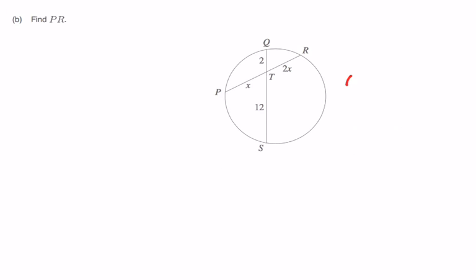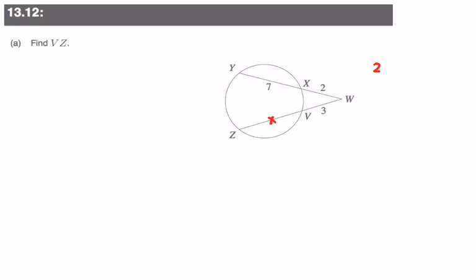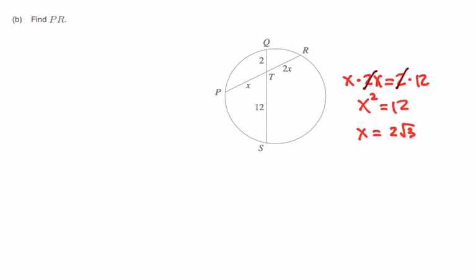Let's move on to the next question. Same deal here — we apply the same theorem. X times 2X is equal to 2 times 12, then X squared must be equal to 12 by cancelling the 2's on each side, so X must be equal to 2 radical 3. To find PR, PR is 3 times that value, so PR must be equal to 6 square root of 3.